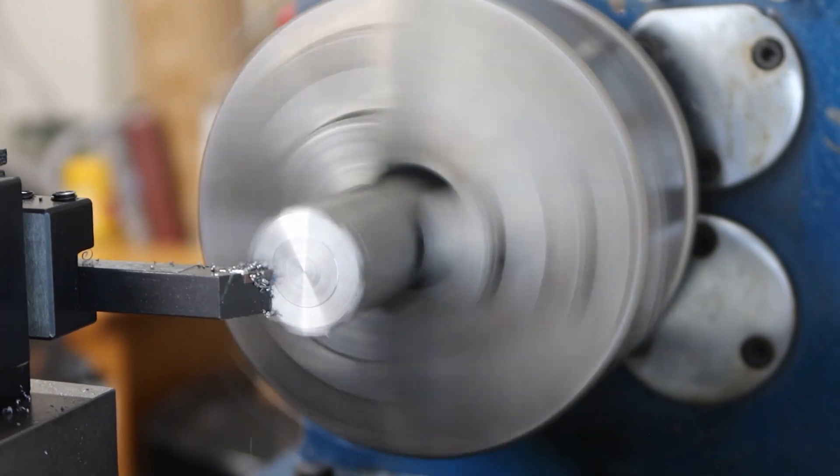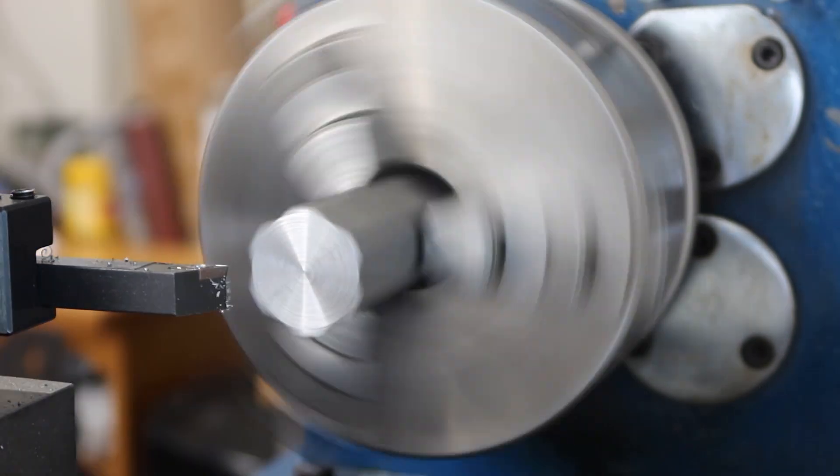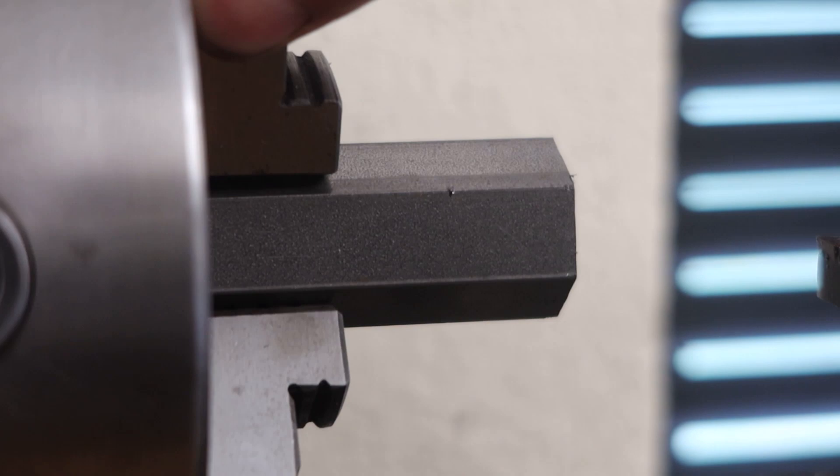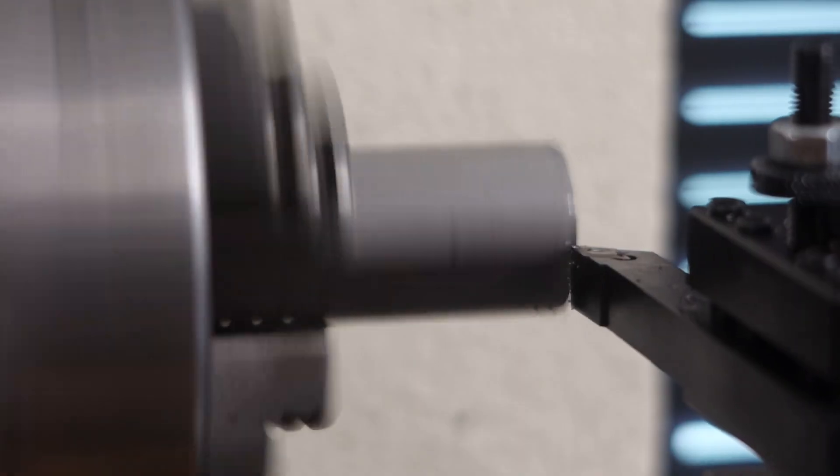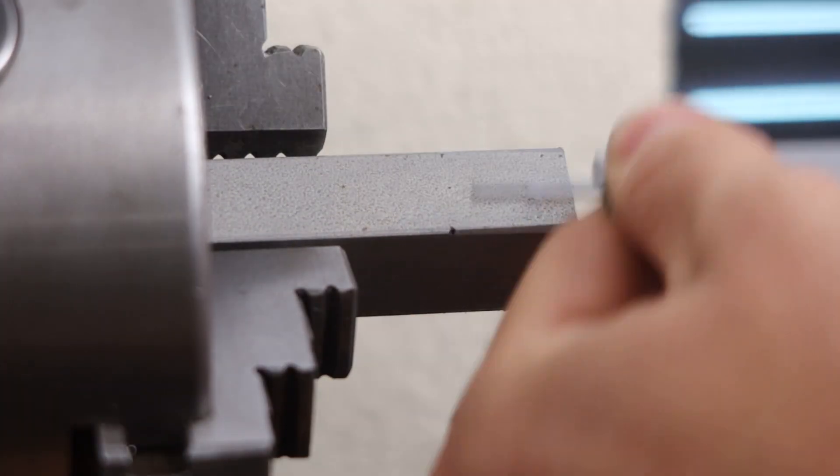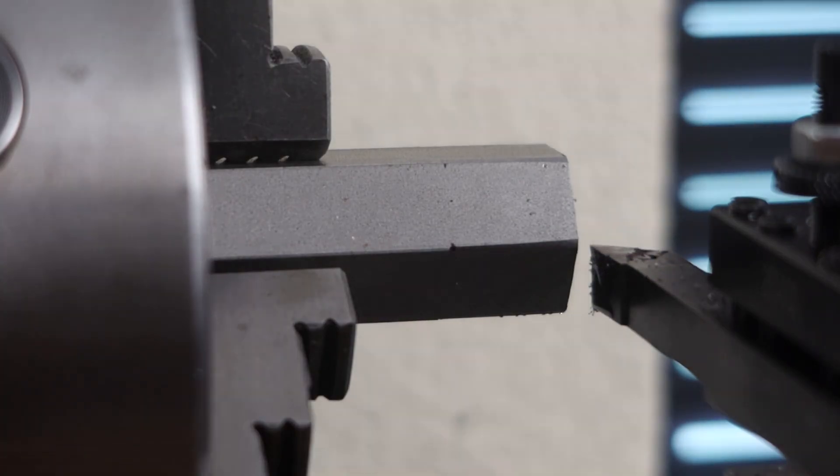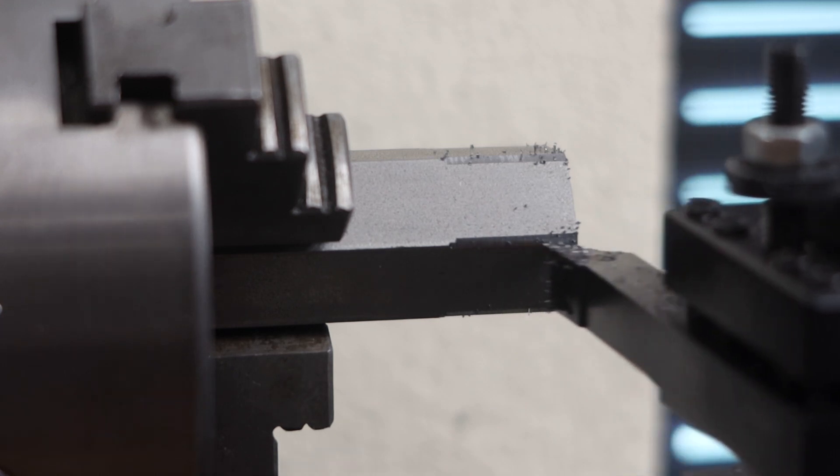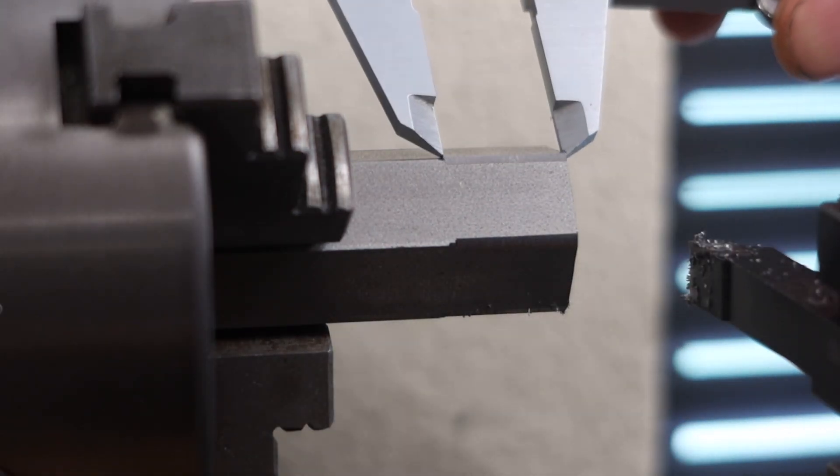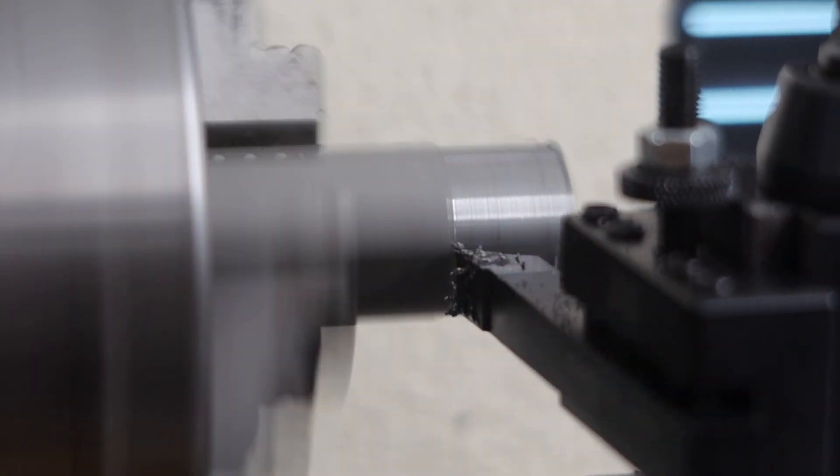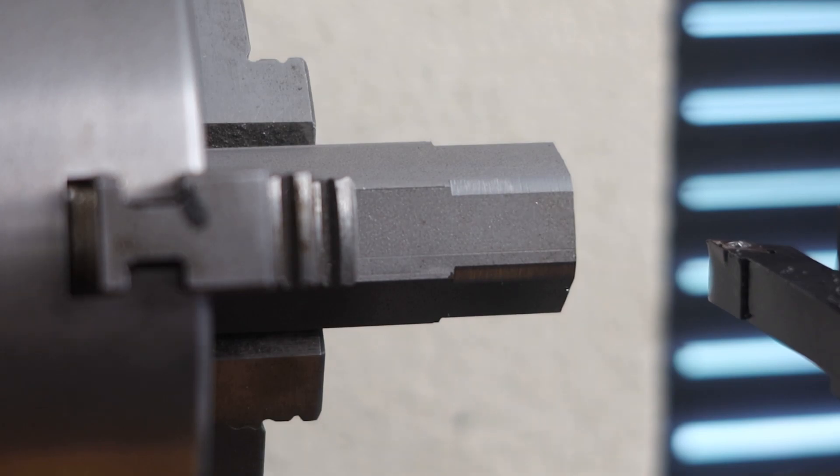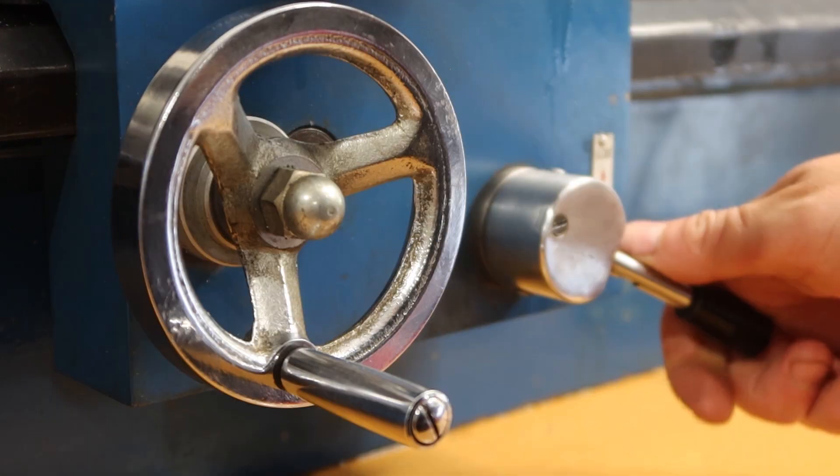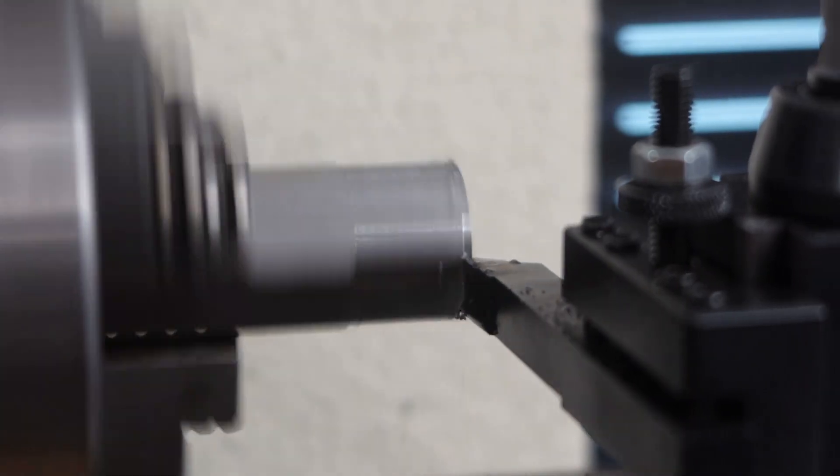We'll start by facing the part. This will smooth up the end cut by the bandsaw and give us our new datum. Looking at the drawing, the length to the top of the radius is meant to be 22 mils, minus the size of the radius gives us 20 mils. I'll continue to take very light cuts due to this being an interrupted cut because of the hex bar. It creates a lot of stress on the tool insert and can damage very quickly.